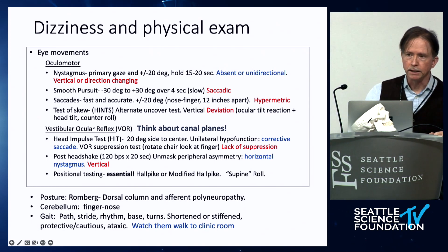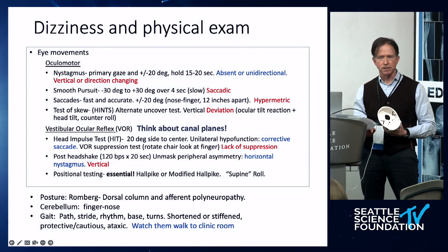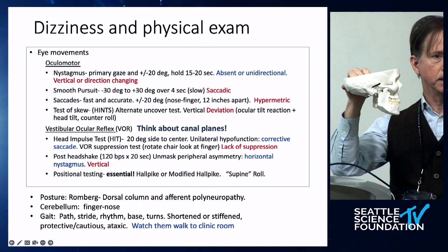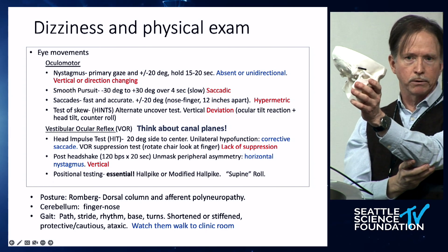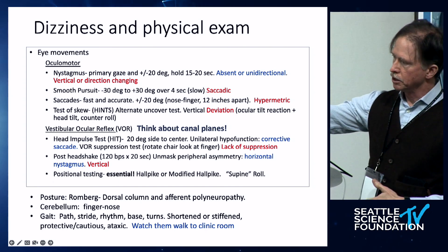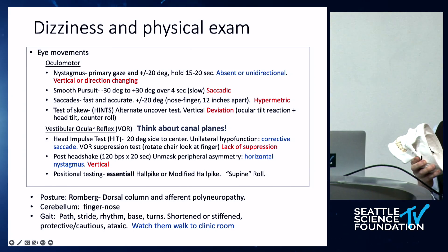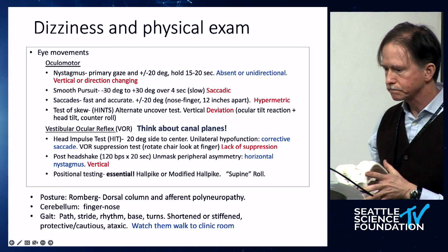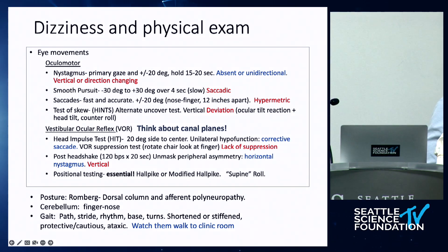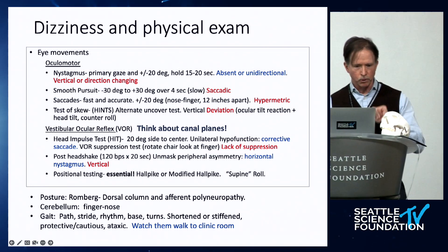For the vestibulo-ocular reflex, I brought a model here because when doing VOR testing it's important to remember the axis of the canals. The horizontal canal is not truly horizontal, so when testing — for example with a head shake or corrective saccades — tilt the head into the plane of the lateral canal to get a pure response. Similarly, for the Dix-Hallpike test, you turn the head 45 degrees to line up the posterior canal in the vertical plane. For head-shake nystagmus, tilt the head forward slightly and shake at approximately 2 Hz — about the tempo of 'Stayin' Alive' for CPR.